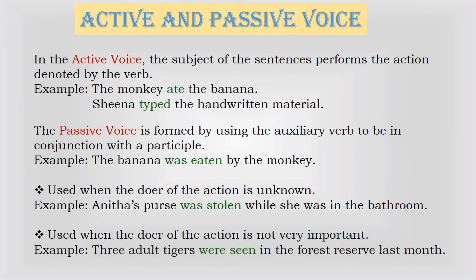Active and Passive Voice. In the active voice, the subject of the sentence performs the action denoted by the verb. For example: the monkey ate the banana; Sheena typed the handwritten material. The passive voice is formed by using the auxiliary verb 'to be' in conjunction with the past participle. For example: the banana was eaten by the monkey. Passive voice is used when the doer of the action is unknown — for example, Anita's purse was stolen while she was in the bathroom — or when the doer is not very important, for example, three adult tigers were seen in the forest reserve last month.